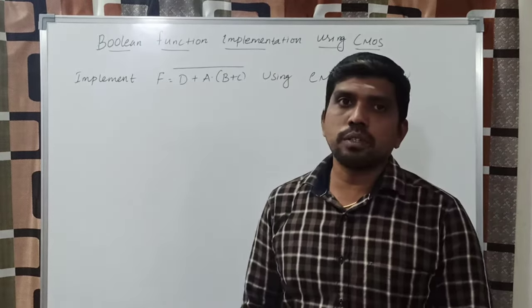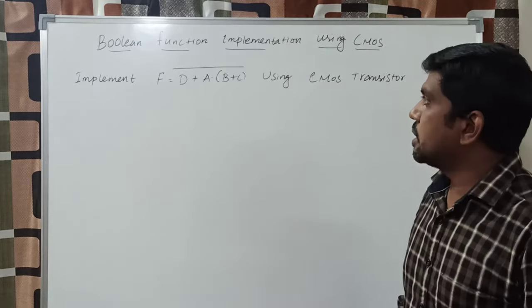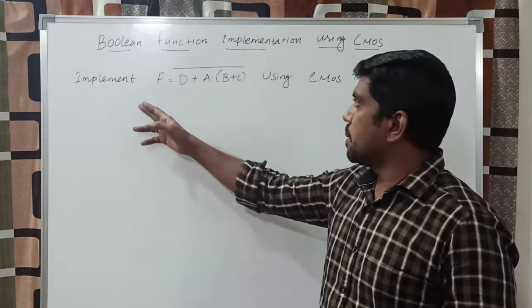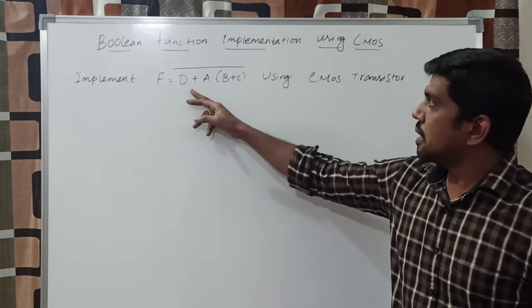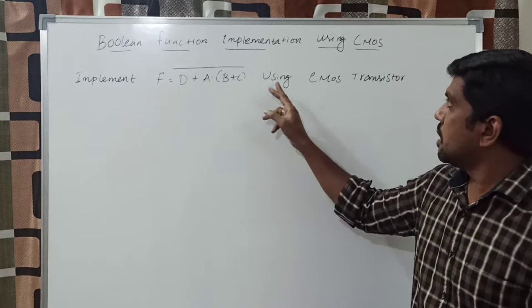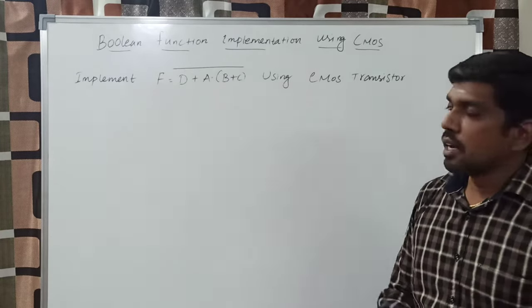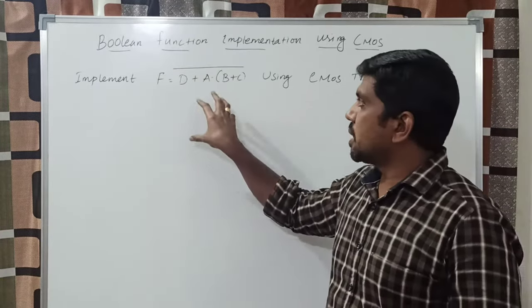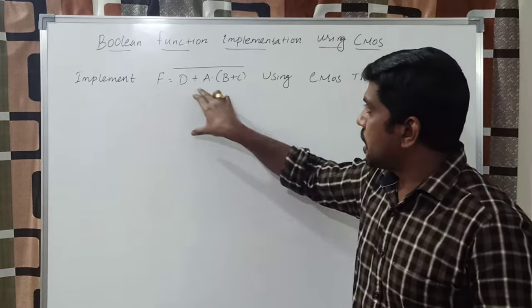Let me discuss one simple problem. First I read the problem: implement function F equal to D plus A dot B plus C using CMOS transistor. In this problem, the given value is the equation.